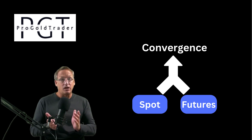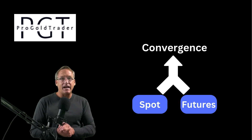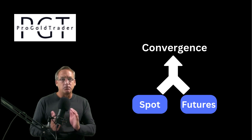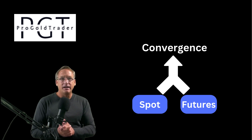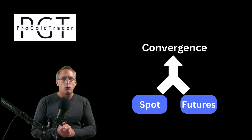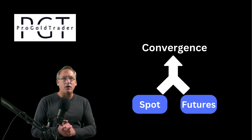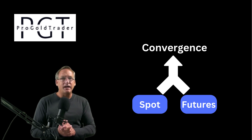There are a few reasons why spot and futures prices converge. A big one is arbitrage — the process of buying an asset in one market and selling it in another at a higher price. Arbitrageurs play an important role in the futures market, buying and selling futures contracts to exploit any price discrepancies. If the spot price is higher than the futures price, arbitrageurs will buy in the spot market and sell in the futures market, increasing demand for the commodity in the futures market, causing the spot price to fall and futures prices to rise.